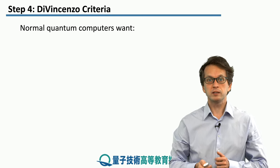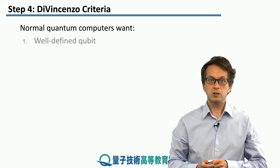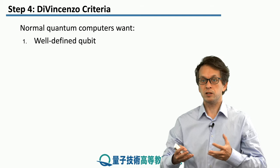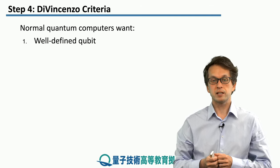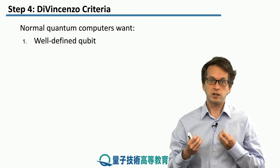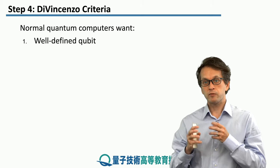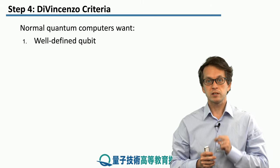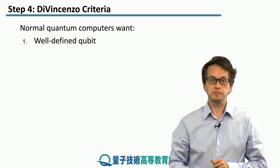First, if you want to build a good quantum computer, you need a well-defined qubit. Qubits don't come for free in nature. Usually we have very complicated systems with many different energy levels. And in order to have a good, well-defined qubit, you must be able to take a system for which you can only address two levels and distinguish and control them in a very good way.